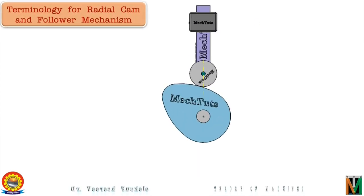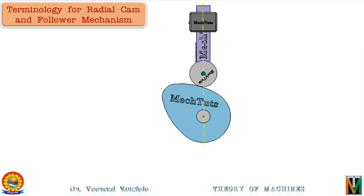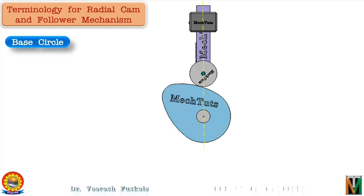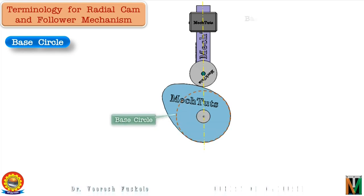The actual shape of a cam can be designed once the desired motion of the follower is defined. The shape of the cam depends on the size of the cam along with the configuration of the follower. Prior to designing the profile of a disc cam some geometric features must be defined. The first term is base circle — it is the smallest circle that can be drawn with the center at the center of the cam and tangential to the cam profile as seen here.